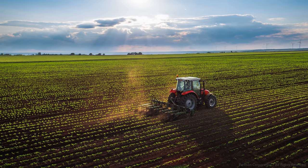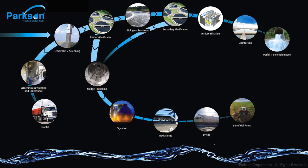Before we go into any more detail on the flow diagram, let's first take a step back and look at what exactly we're treating and why. In this tank, we'll take a look at what makes up most municipal wastewater. The first and most prominent component is water.